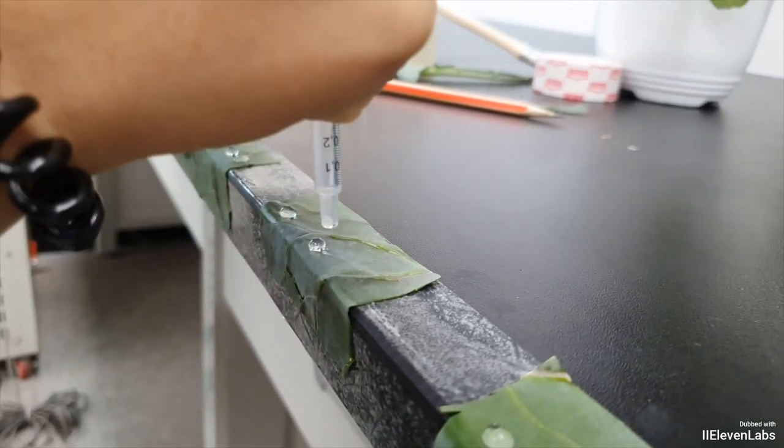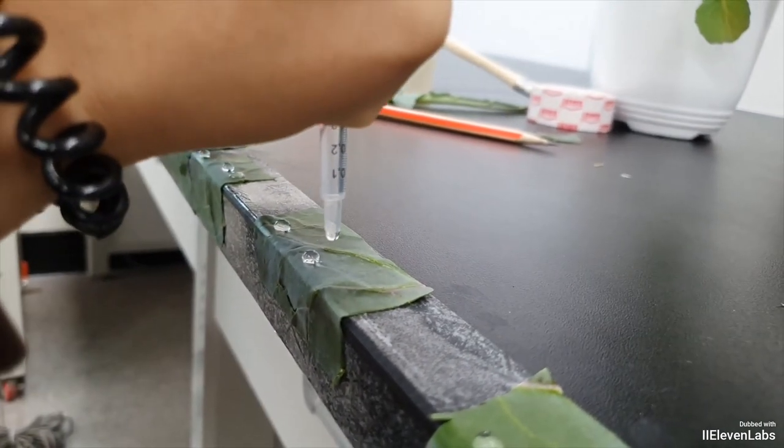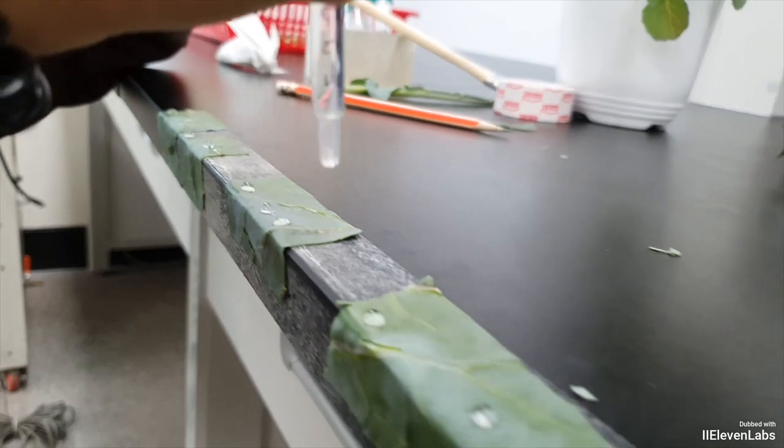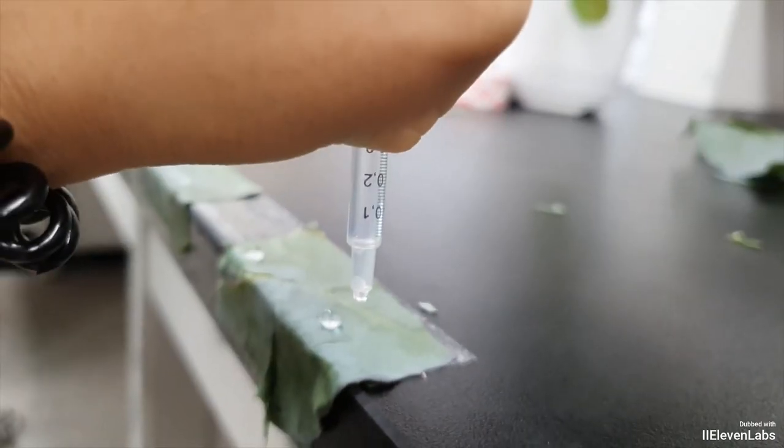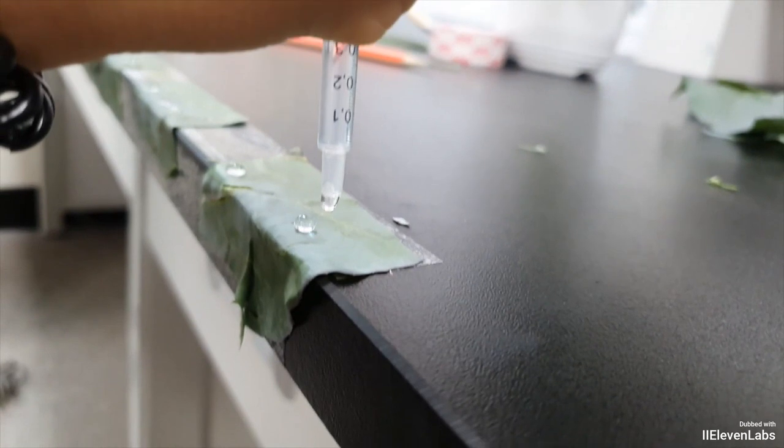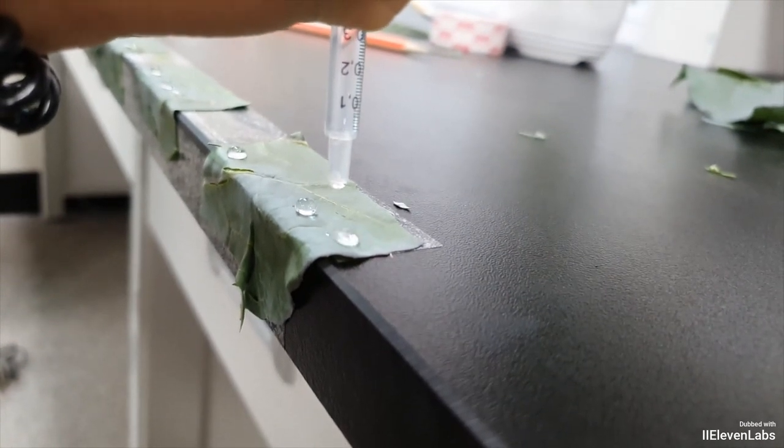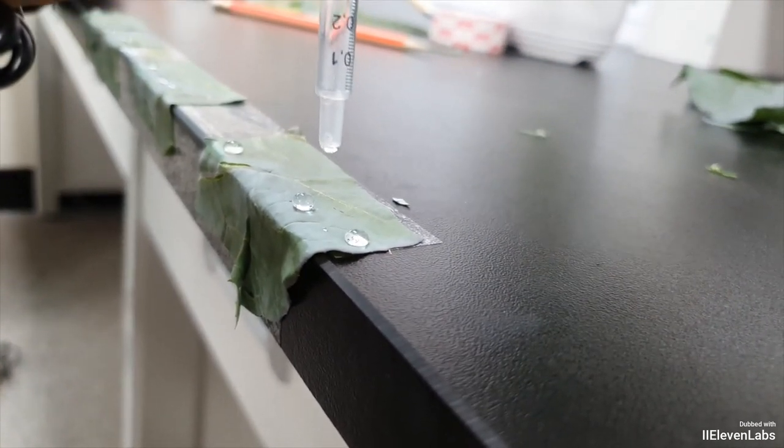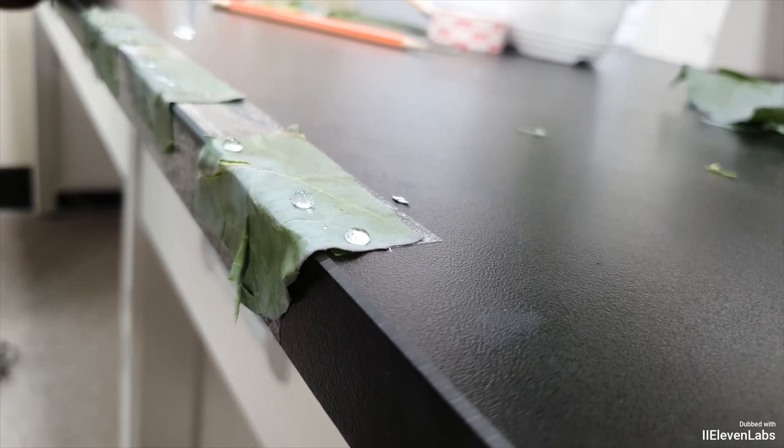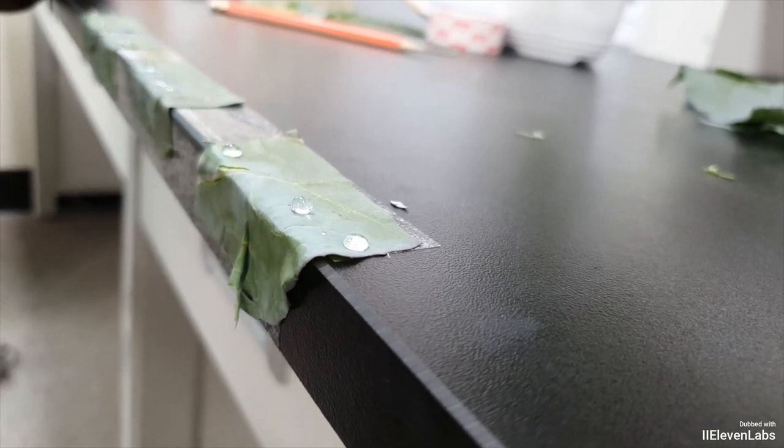This is the same principle used when applying pesticides, and this experiment simulates that process. In the setup using soapy water, you can see that the water droplets adhere immediately to the plant surface. Students can use a paired t-test to compare contact angles of water and soapy water on waxy surfaces.